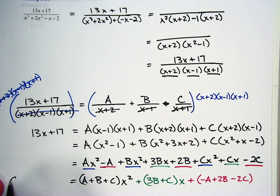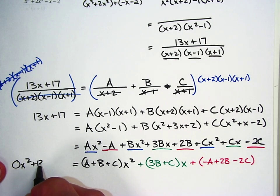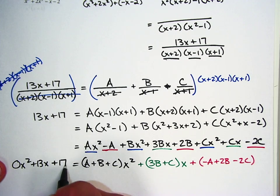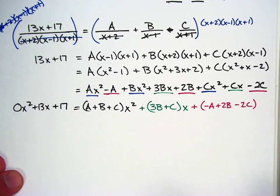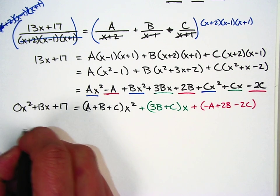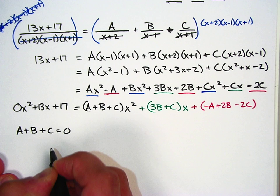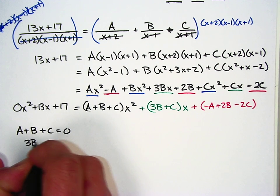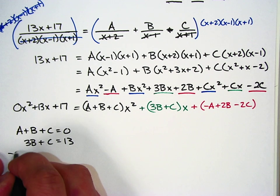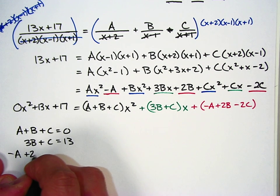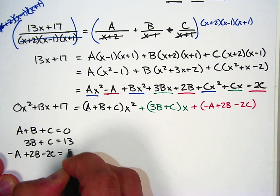I have three terms on the left: 0x squared plus 13x plus 17. Now, A plus B plus C equals 0. The 3B plus C equals 13. And negative A plus 2B minus 2C equals 17.